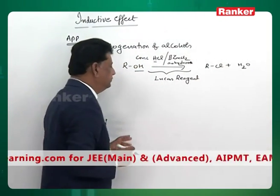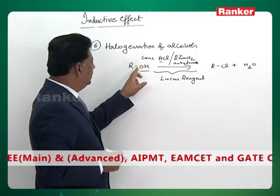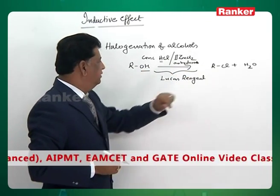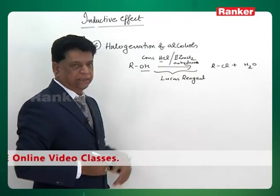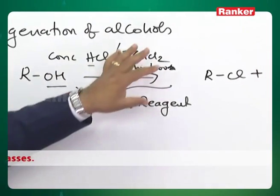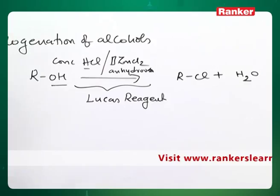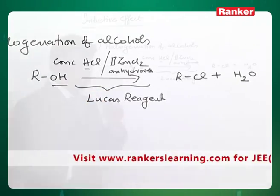That is the overall reaction. Cl is coming in the place of OH so RCl is formed, HOH goes out as water. You can balance the reaction. We can understand zinc chloride is only a catalyst because it is not participated in the main reaction.